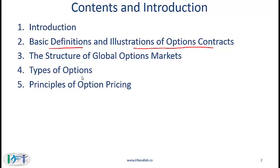Then we get into different types of options. As we've seen in earlier parts of derivatives, types generally refers to the type of underlying. So we'll have options based on currency, stocks, bonds, or an index. And finally, Section 5, Principles of Option Pricing, which I think is perhaps the most testable aspect of this reading.